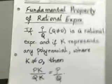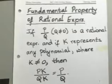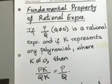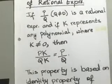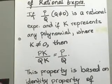Now, let's talk about the fundamental property of rational expressions because this property is what will help us in writing the expressions in lowest terms. The property says if you have p over q as a rational expression and k represents any polynomial where, of course, k does not equal 0...